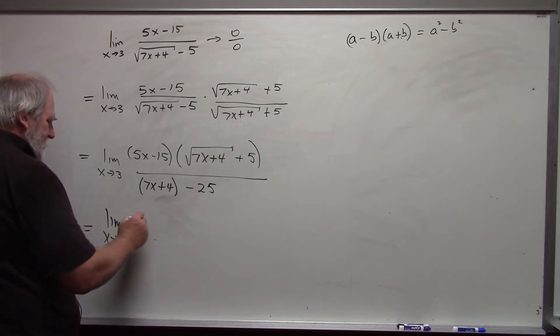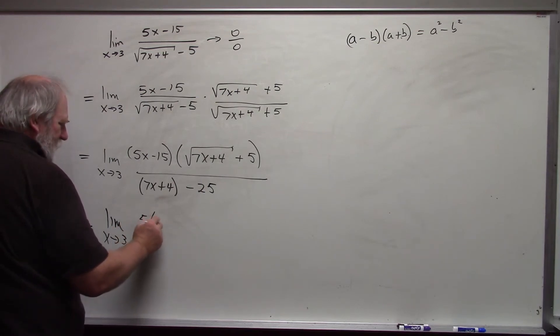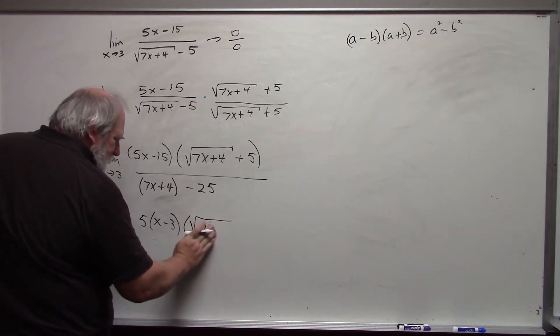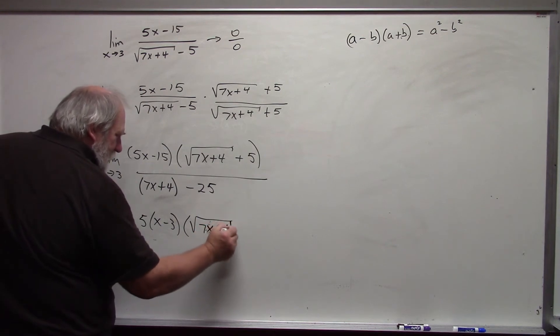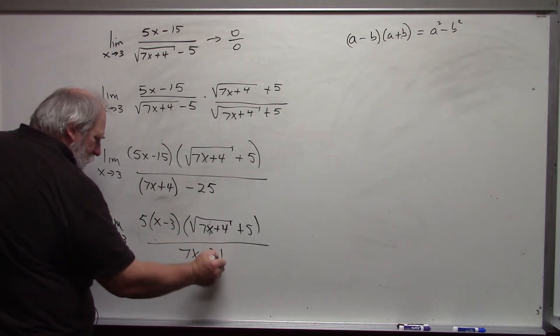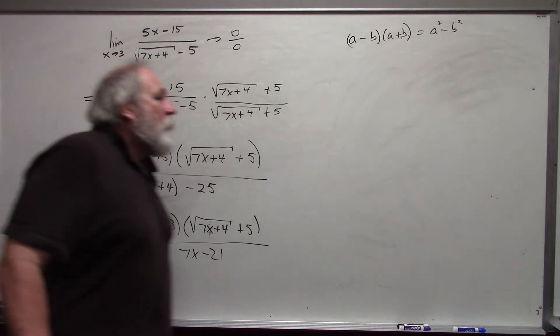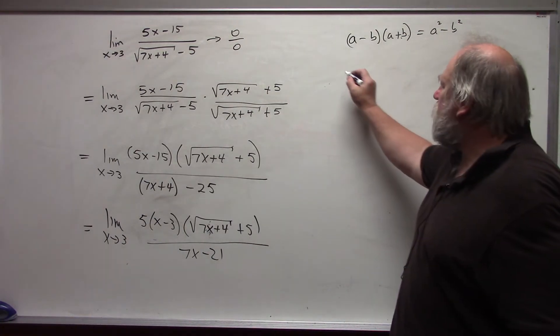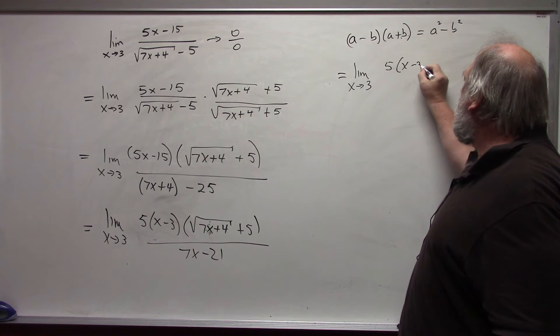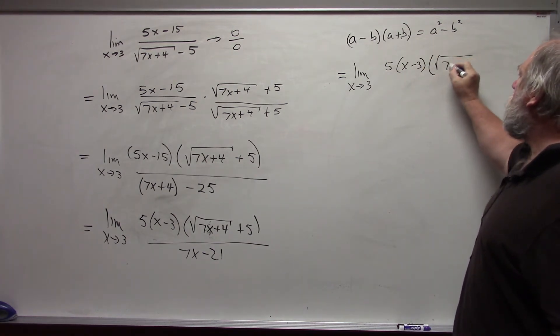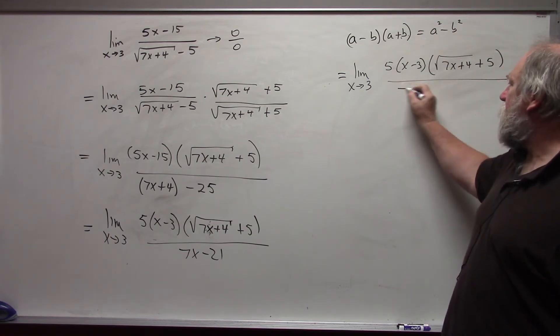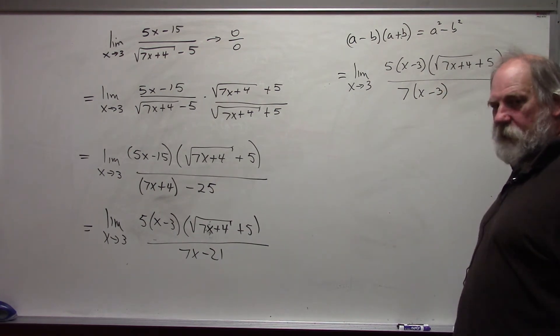Limit x approaches 3. I can factor out the 5. And I'm left with x minus 3 times the square root of 7x plus 4 plus 5 over, this is 7x minus 21. I will factor out the 7 in the denominator.